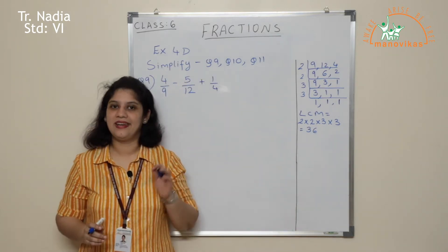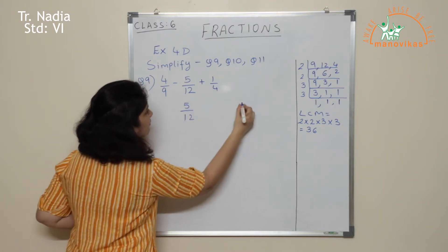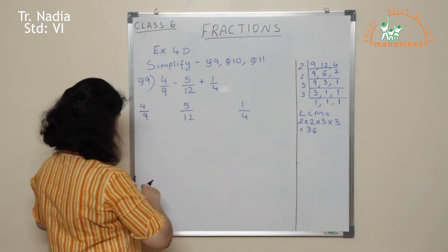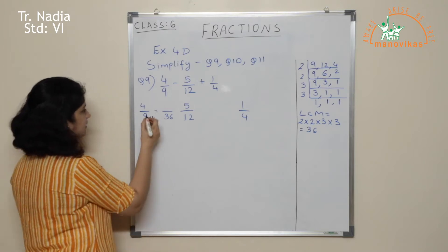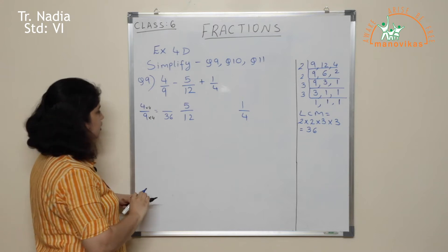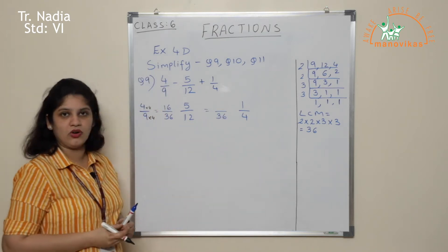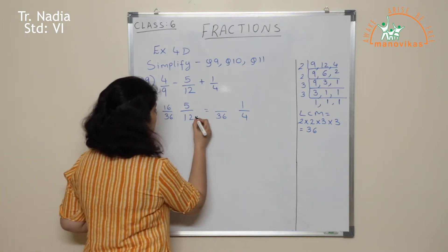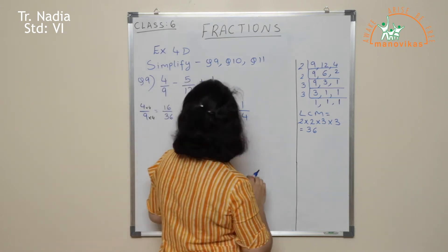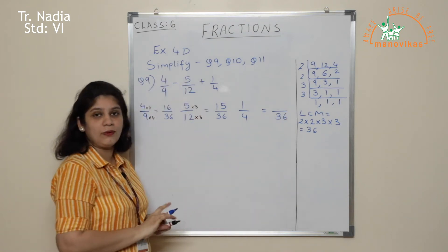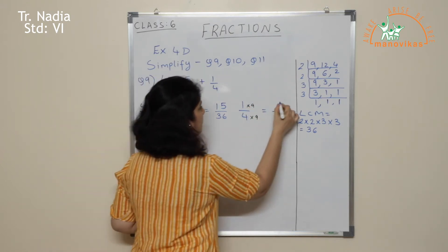My next step is to make all the denominators 36. So let us write all the fractions: 4 upon 9, 5 upon 12, and 1 upon 4. To make 9 into 36: 9 × 4 = 36, so I multiply the numerator by 4 as well, giving a new numerator of 16. To make 12 into 36: 12 × 3 = 36, so 5 × 3 = 15, giving 15 upon 36. The last fraction has denominator 4: 4 × 9 = 36, so 1 × 9 = 9, giving 9 upon 36.